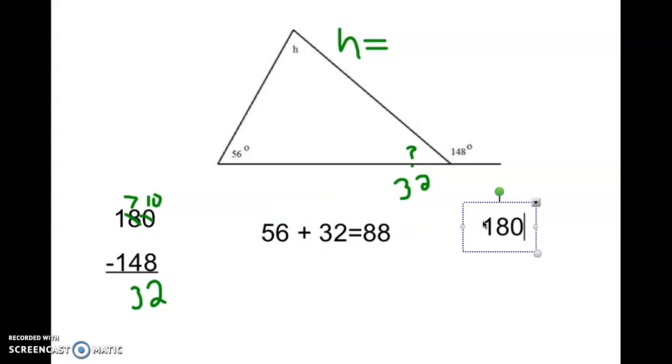And then we do our 180 degrees inside minus 88. To solve that, we do need to do some extra regrouping here. So 10 minus 8 is 2, but I can't do 7 minus 8, so I need to make that 17 minus 8 is 9. So our angle h is 92 degrees, and that is how you figure out angles of the interior of a triangle.